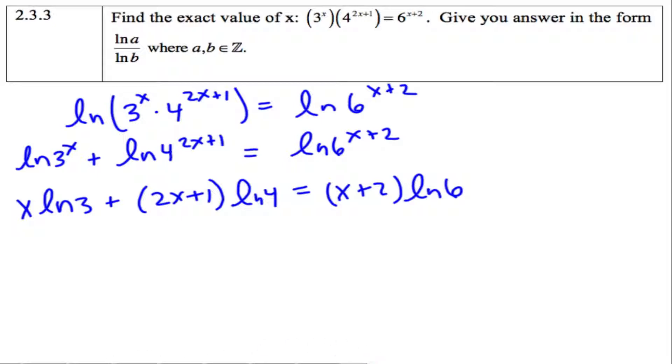And now, ln 3, ln 4, ln 6 are all just numbers. We can distribute them just like any other value.